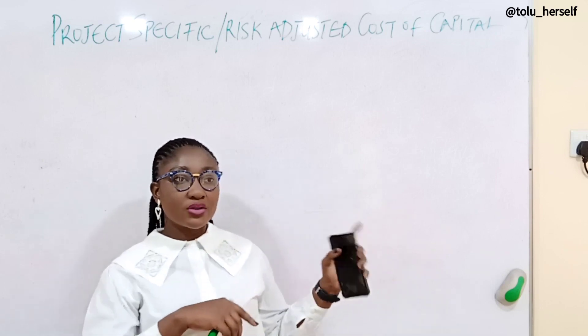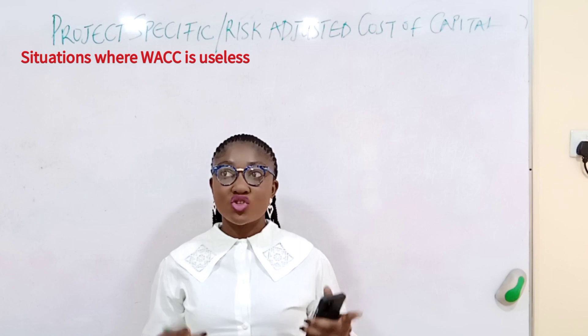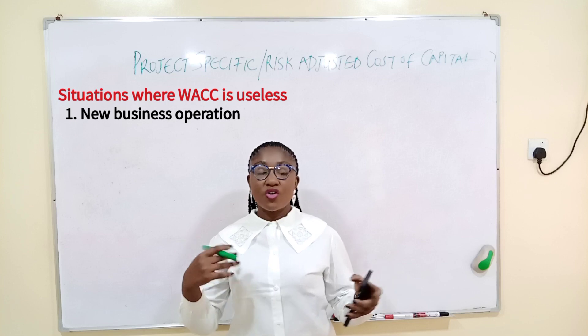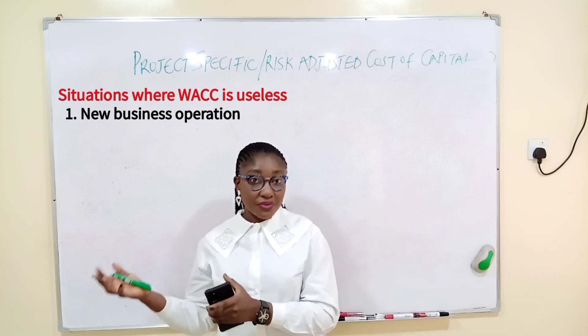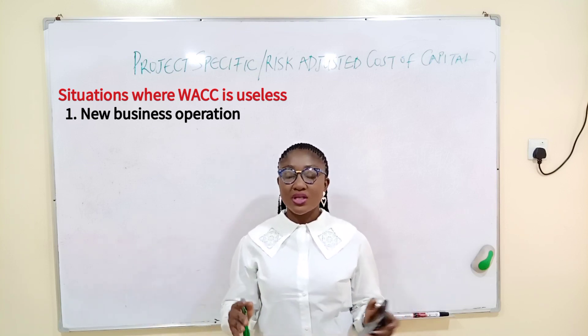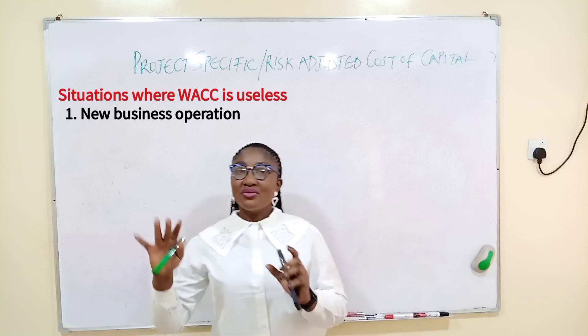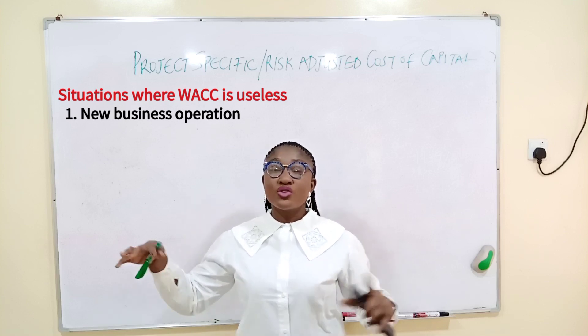In our last class we solved an example on estimating WACC and I also talked about project-specific cost of capital, giving three situations where WACC is not usable. The first is if there is a new business line — if a company is going into a new business line, the risk with that business should be different. For example, a company that manufactures bread now starting to manufacture sandals or school bags — the risk of that business is different, so they can't use the existing WACC to evaluate the project.